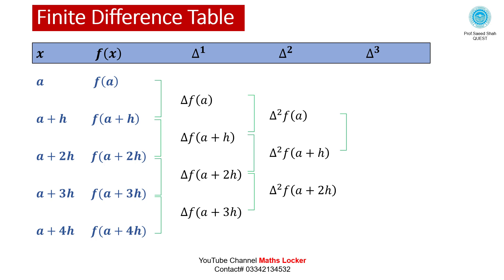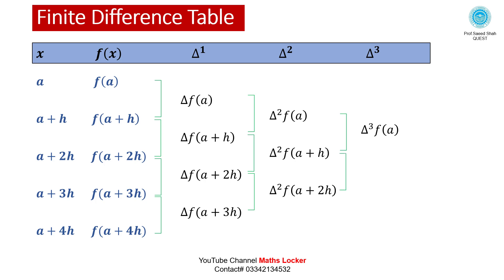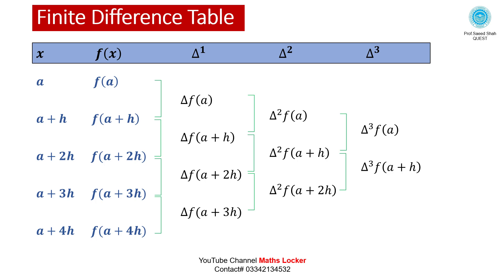Taking the third differences: delta³ f(a) = delta² f(a+h) - delta² f(a), and delta³ f(a+h) = delta² f(a+2h) - delta² f(a+h). Taking the fourth difference: delta⁴ f(a) = delta³ f(a+h) - delta³ f(a).